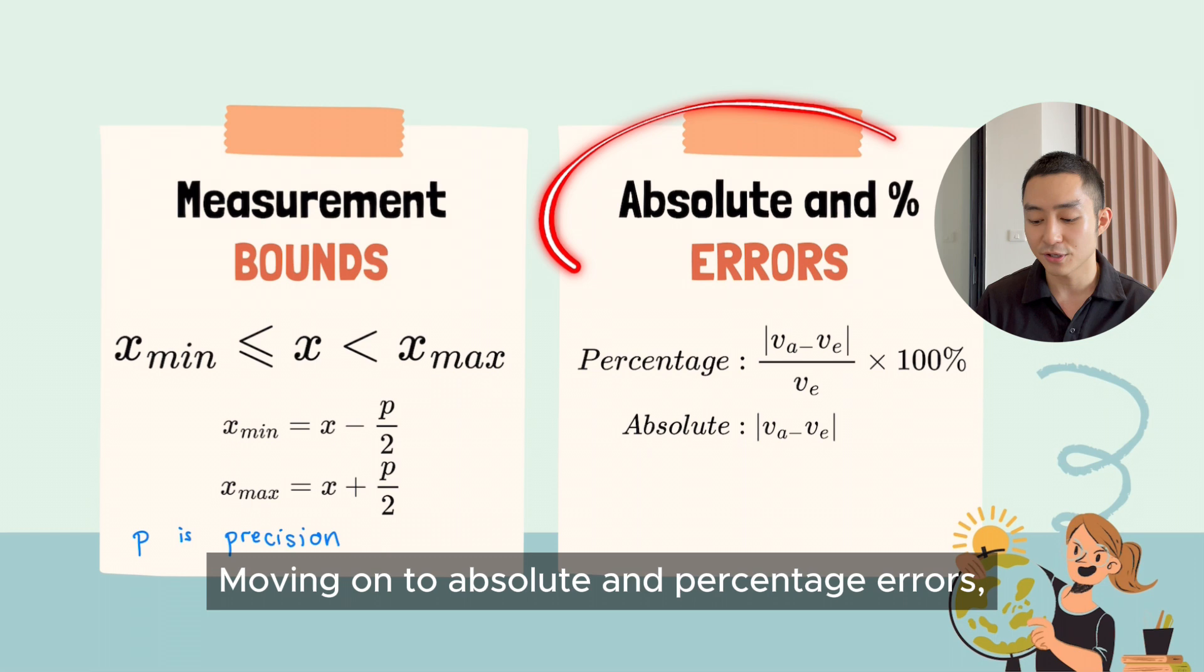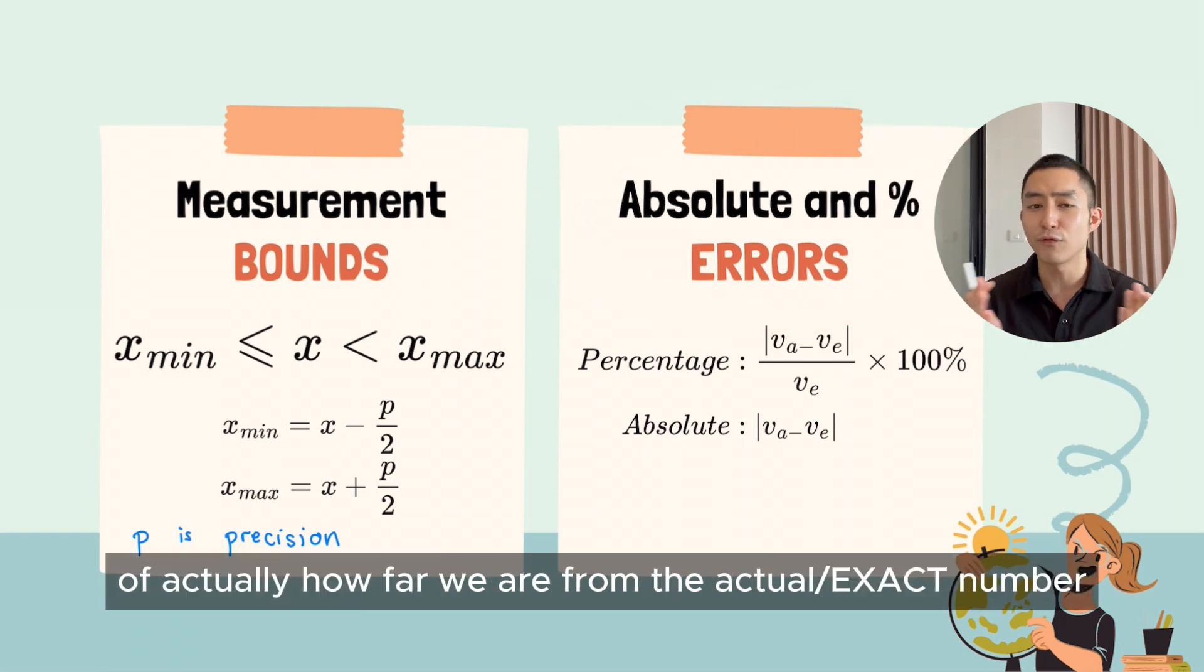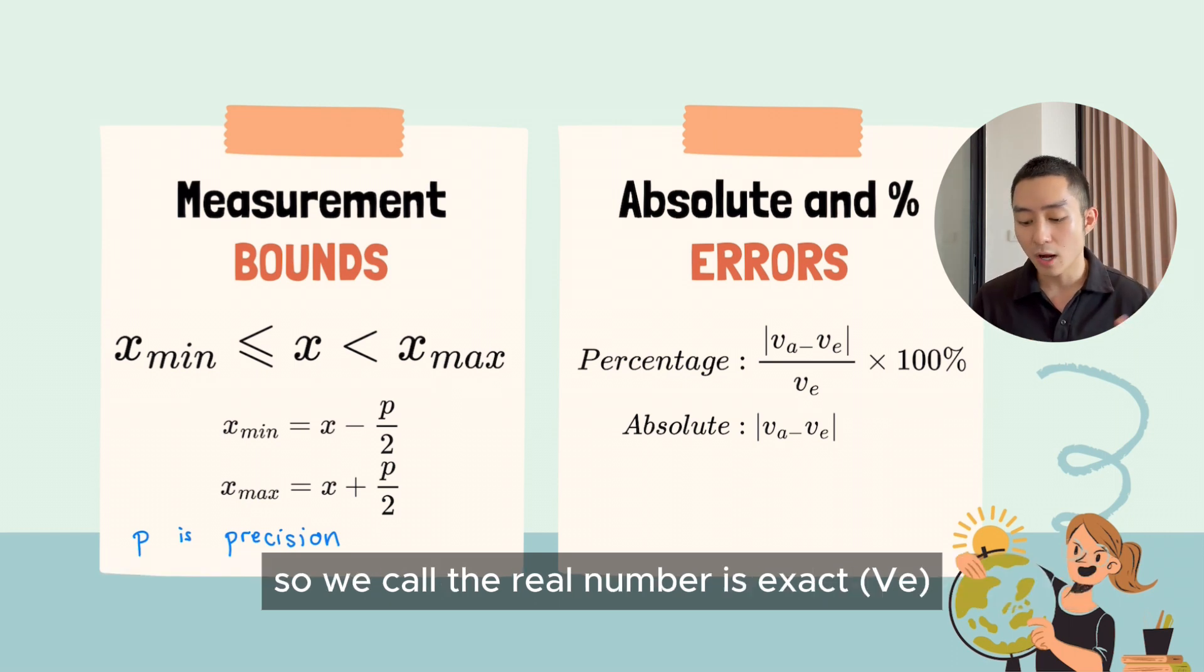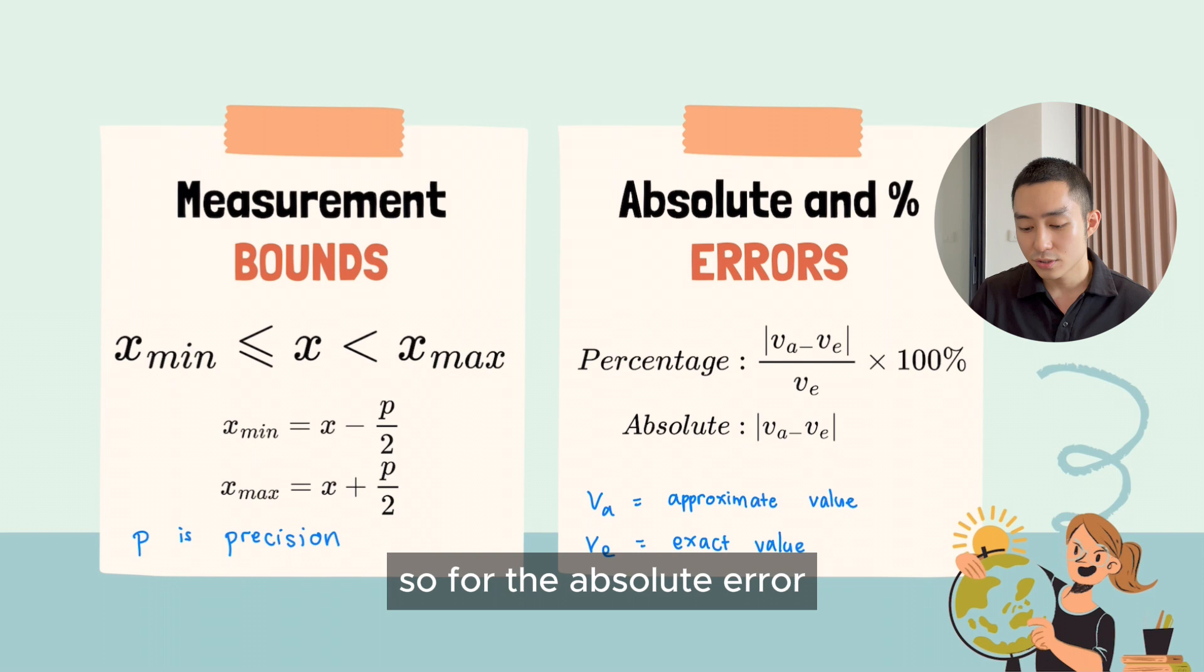Moving on to absolute and percentage errors, it gives us the value of actually how far we are from the actual number. So we call the real number exact and A is value approximate. So for the absolute error,